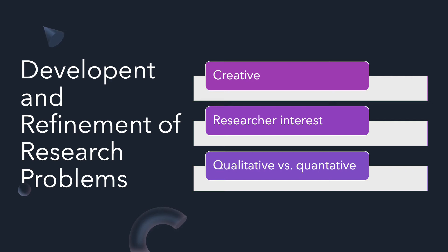When writing a research problem, it must clearly state what is problematic and what must be solved. When you're reading a journal article, you will generally find the problem statement early in the introduction. The research questions, purpose statement, and hypothesis generally appear later in the introduction or even in the last paragraph.